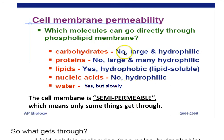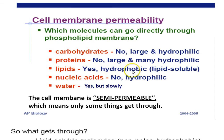Carbohydrates are too big and they're hydrophilic — they won't make it past those fatty acid tails in the phospholipid bilayer. Proteins are also too big and many have hydrophilic R groups. Lipids can get through because they're hydrophobic; the fatty acid tails don't stop them and they can get past those phosphate heads. Nucleic acids are really big and they're hydrophilic with all the nitrogen in there.